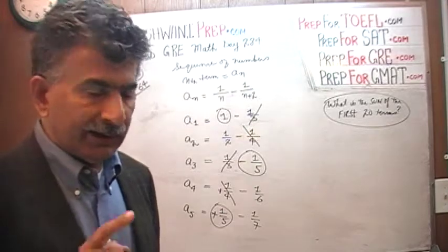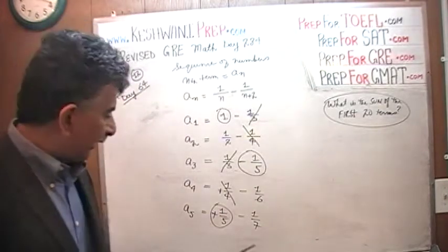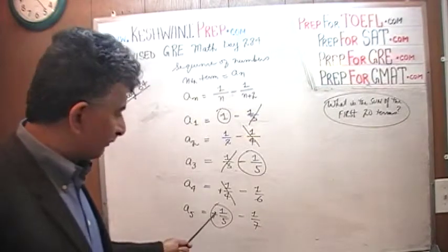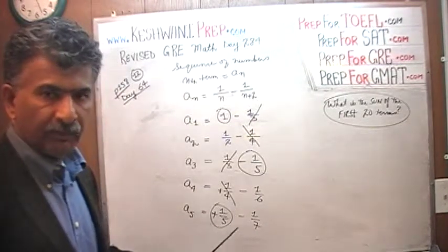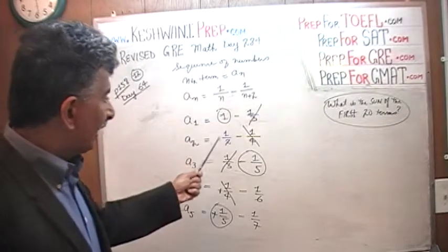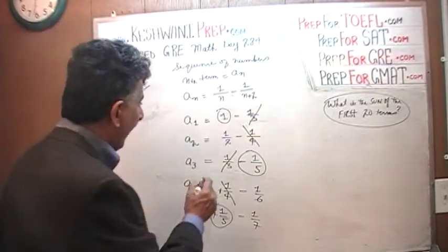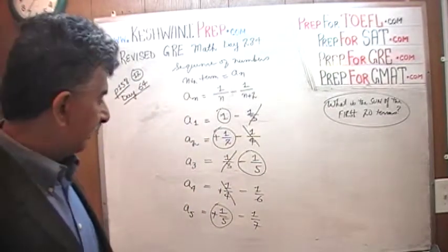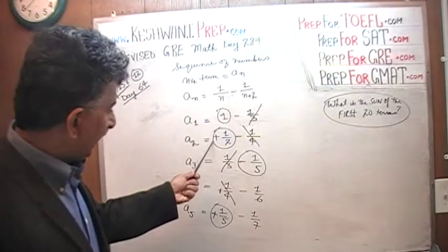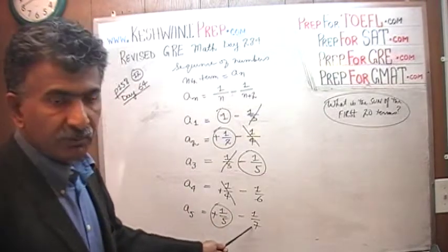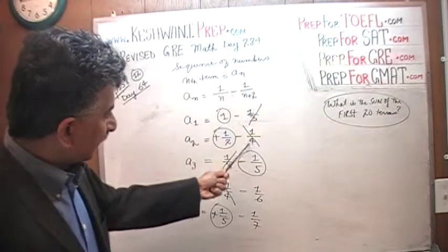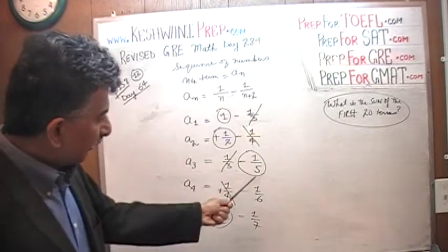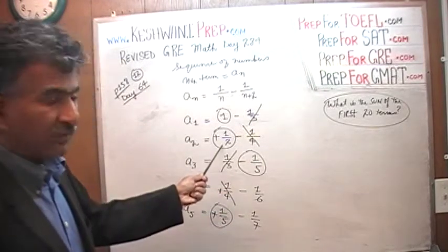What we notice is that we will never get rid of this 1/2. This half is safe — it's never going to go away — because this is a positive 1 and we'll never get a negative 1/2 in this sequence. The negative terms start at 1/3, then 1/4, 1/5, 1/6, and so on. We will never get a negative 1/2. This positive 1/2 is safe, and so is this 1.